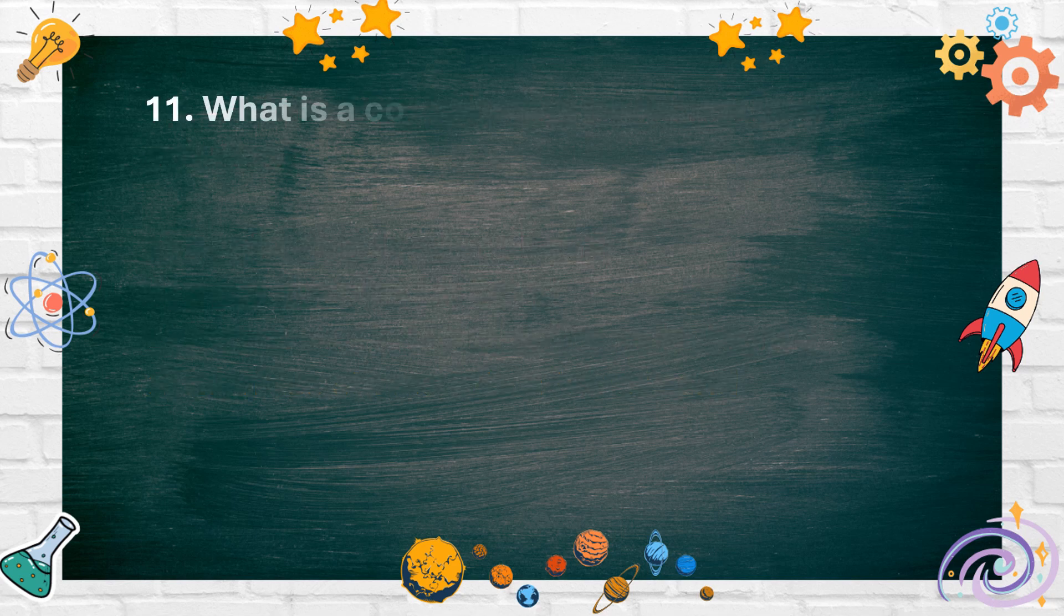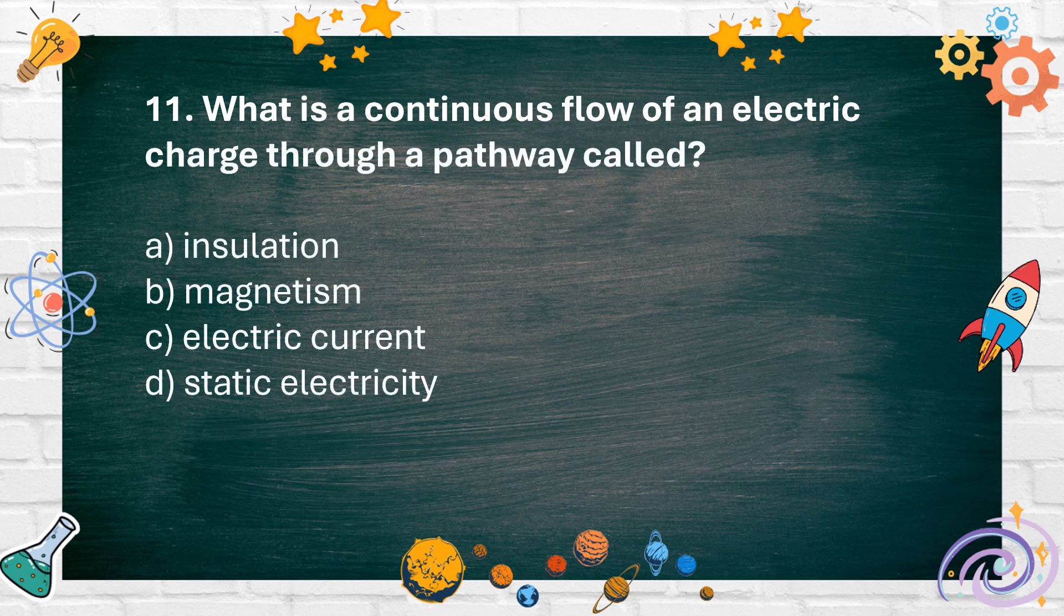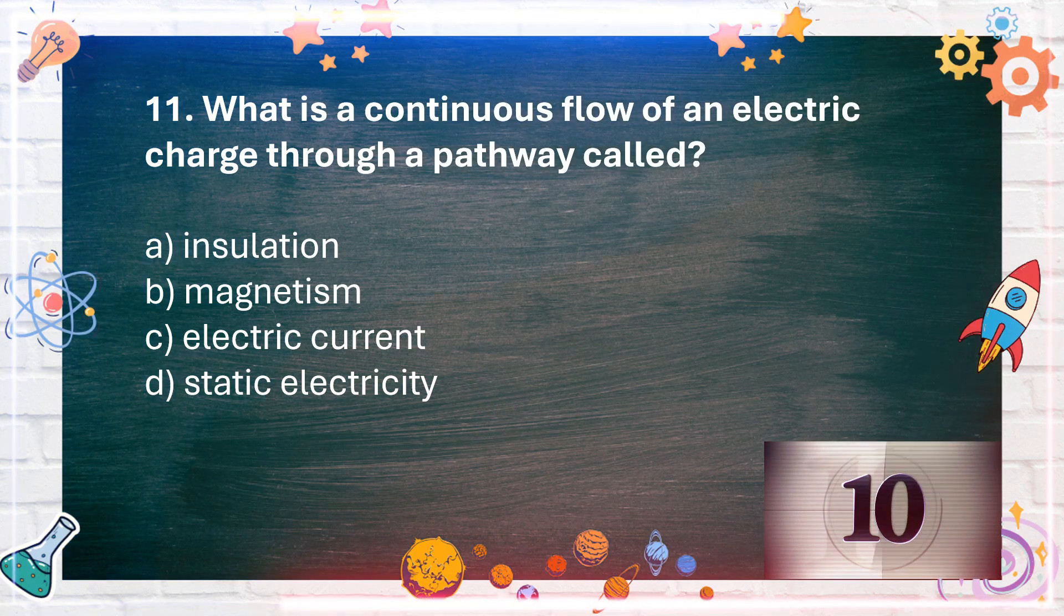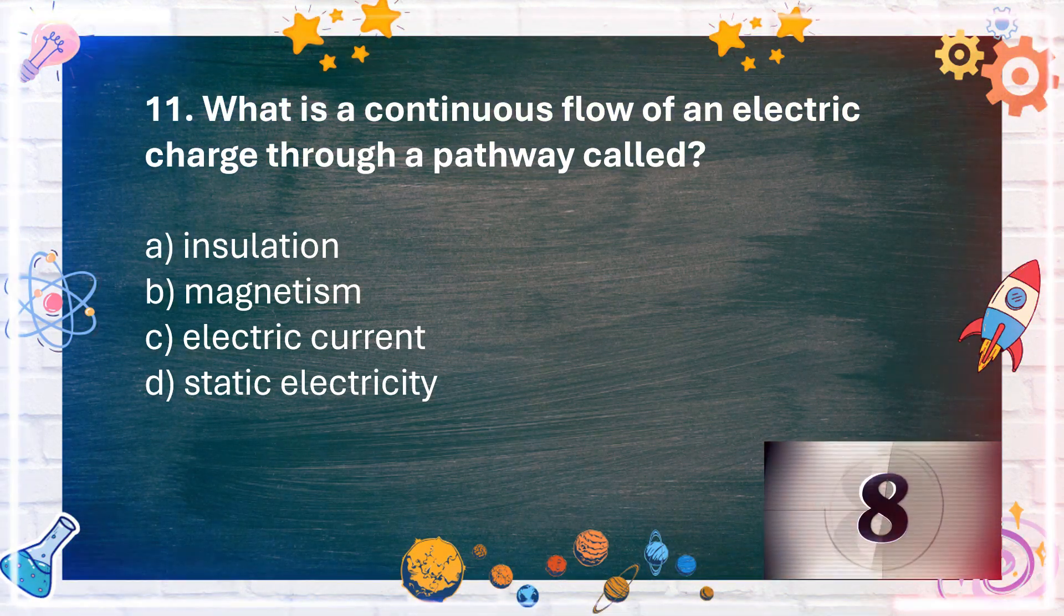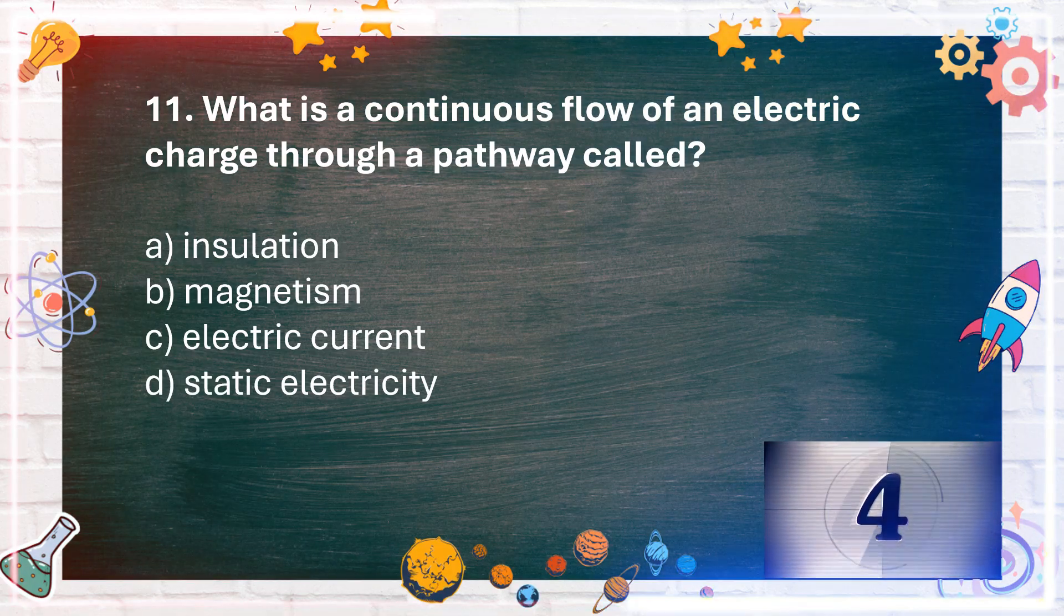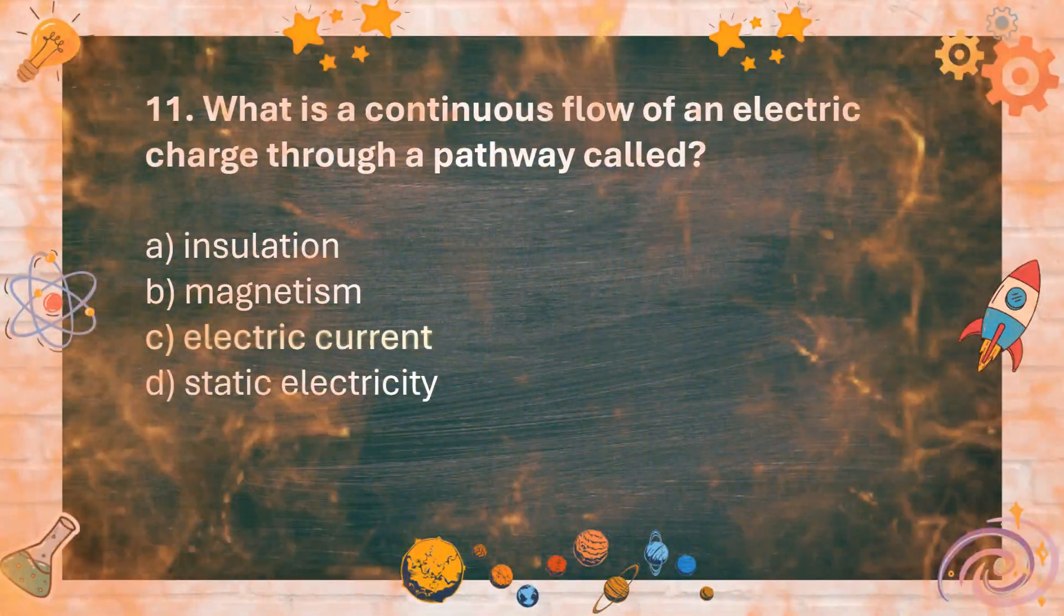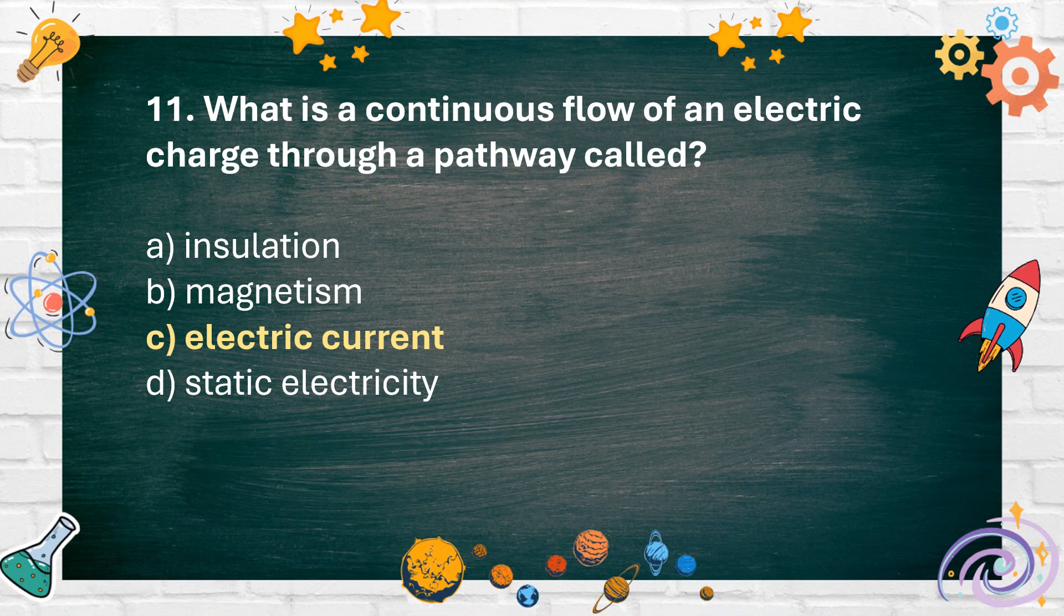Number 11. What is a continuous flow of an electric charge through a pathway called? A. Insulation B. Magnetism C. Electric current D. Static electricity. The answer is C. Electric current.